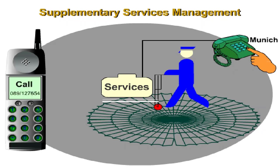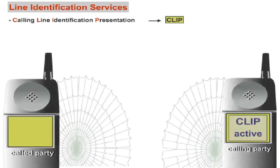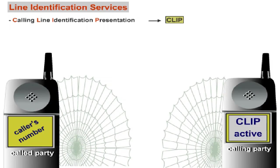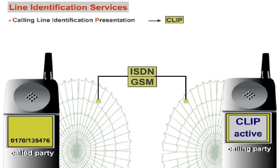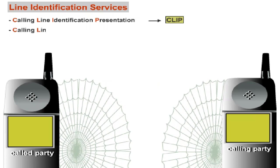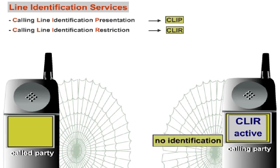The supplementary services subdivide into several types. The line identification services include the calling line identification presentation, CLIP — that is, the display of the caller's number on the called party's mobile station. The network transmits the call number at call setup, provided that both parties are ISDN or GSM customers. Using calling line identification restriction, CLIR, the calling party can restrict its call number so it cannot be identified by the called party.